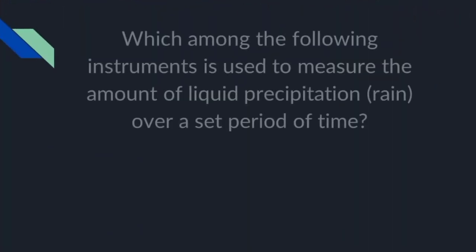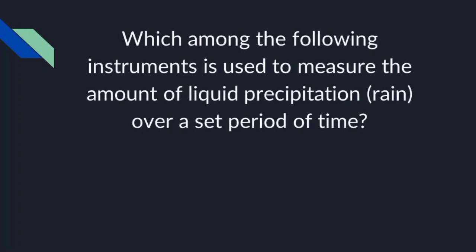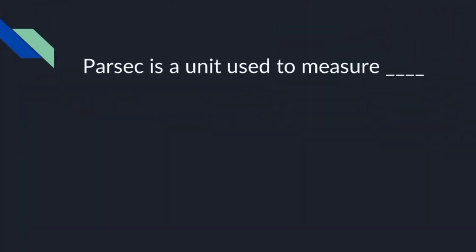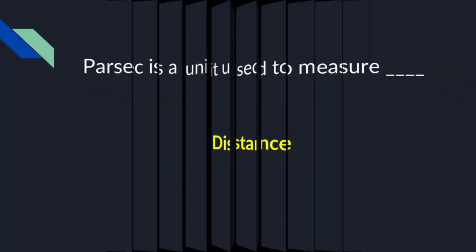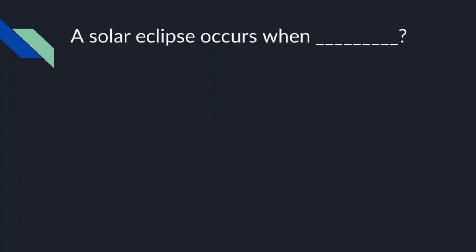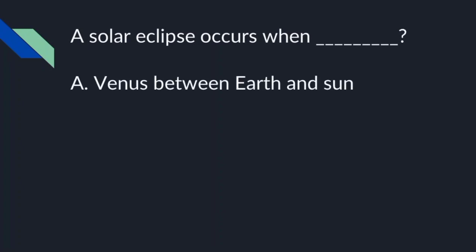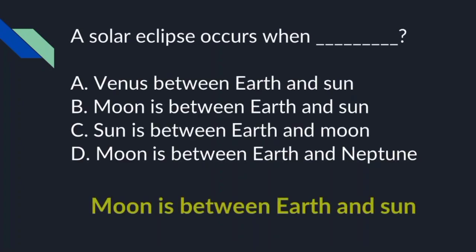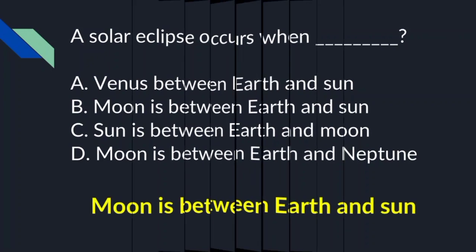Which instrument is used to measure the amount of liquid precipitation or rain over a set period of time? Rain gauge. Parsec is a unit used to measure distance. A solar eclipse occurs when the Moon is between the Earth and the Sun.